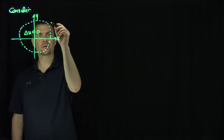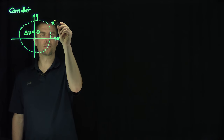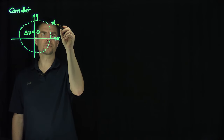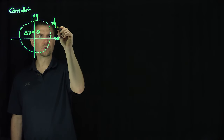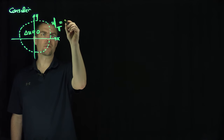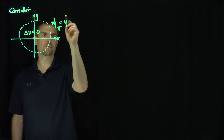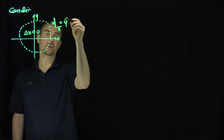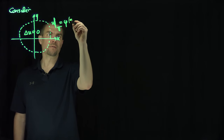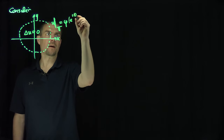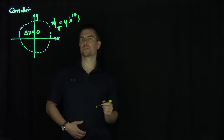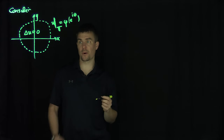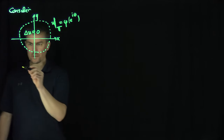We want to prescribe a boundary condition: u restricted to the circle itself — which I'll write as T for the unit circle — should equal a given function phi, which is a function of e to the i-theta, a complex-valued function on the unit circle. That's the problem we want to solve.